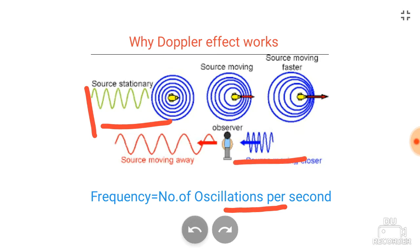So in this case the observed frequency will be higher than the emitted frequency. Similarly, when the source starts to move away from a stationary observer, the observed frequency will be lower than the original frequency. This is the reason why the Doppler effect is observed.